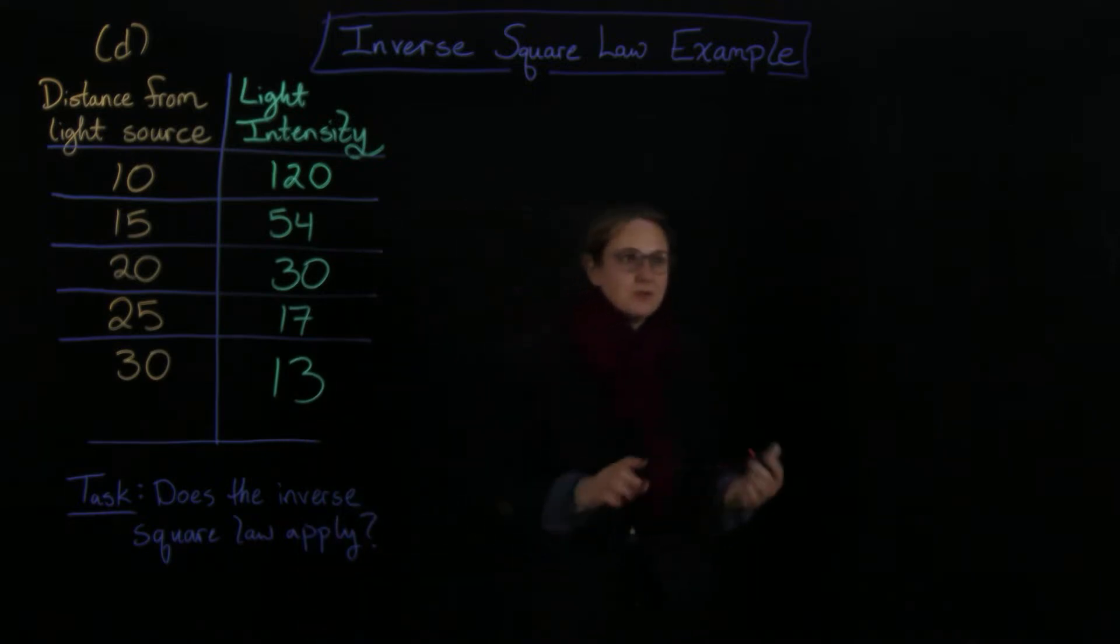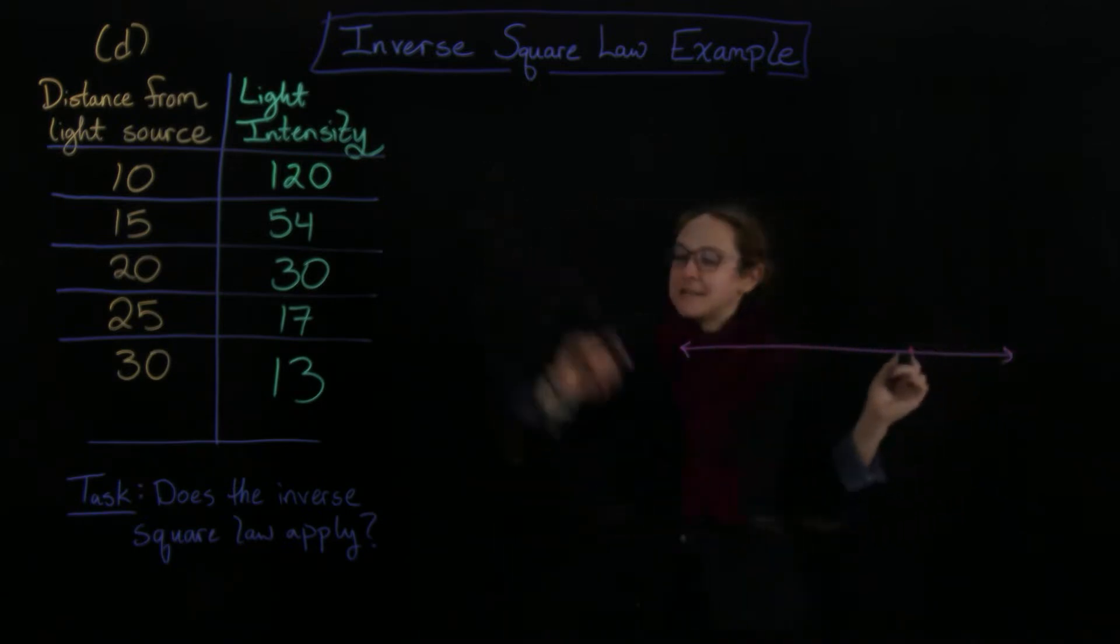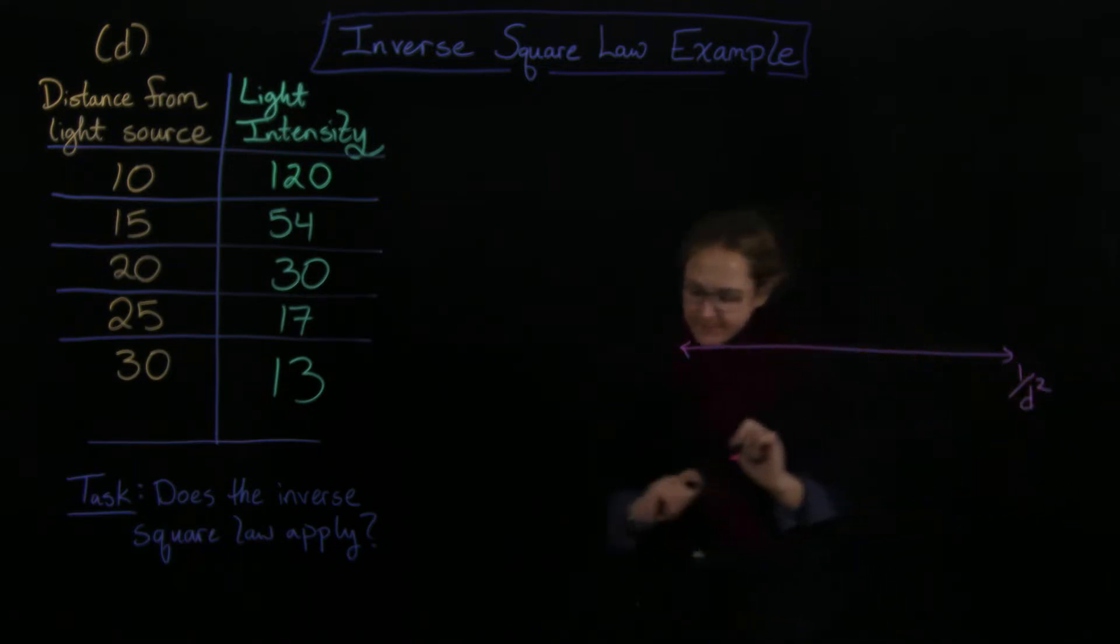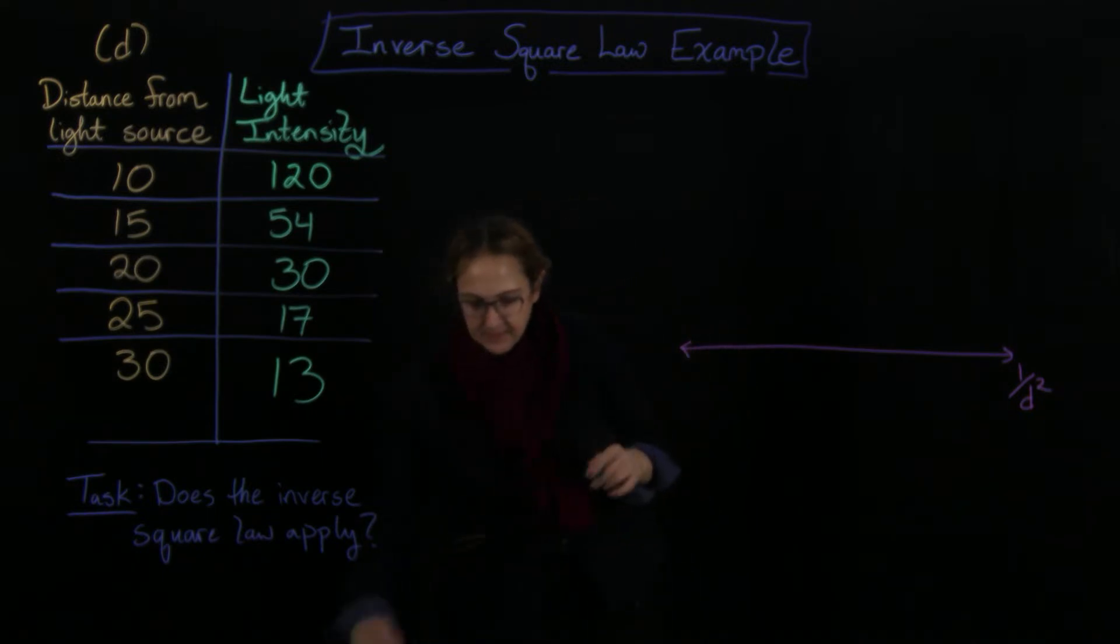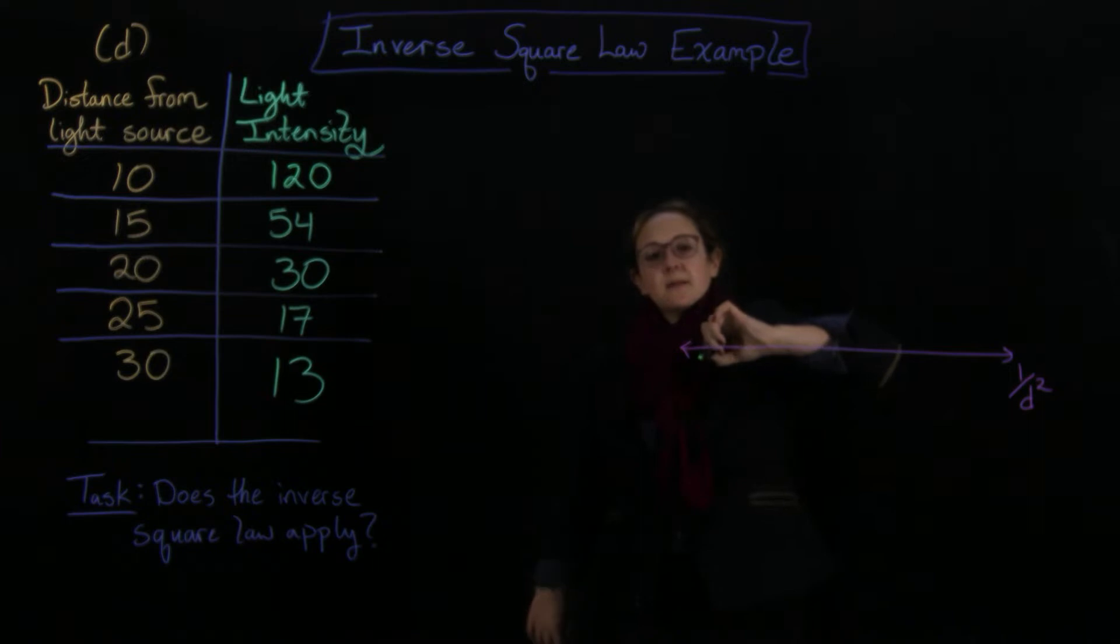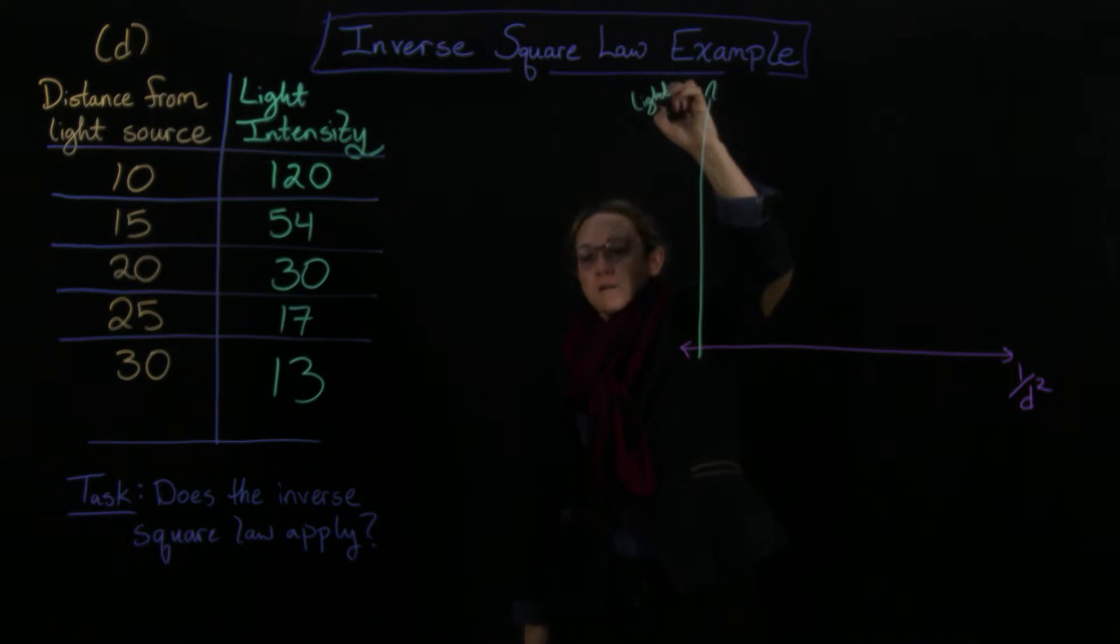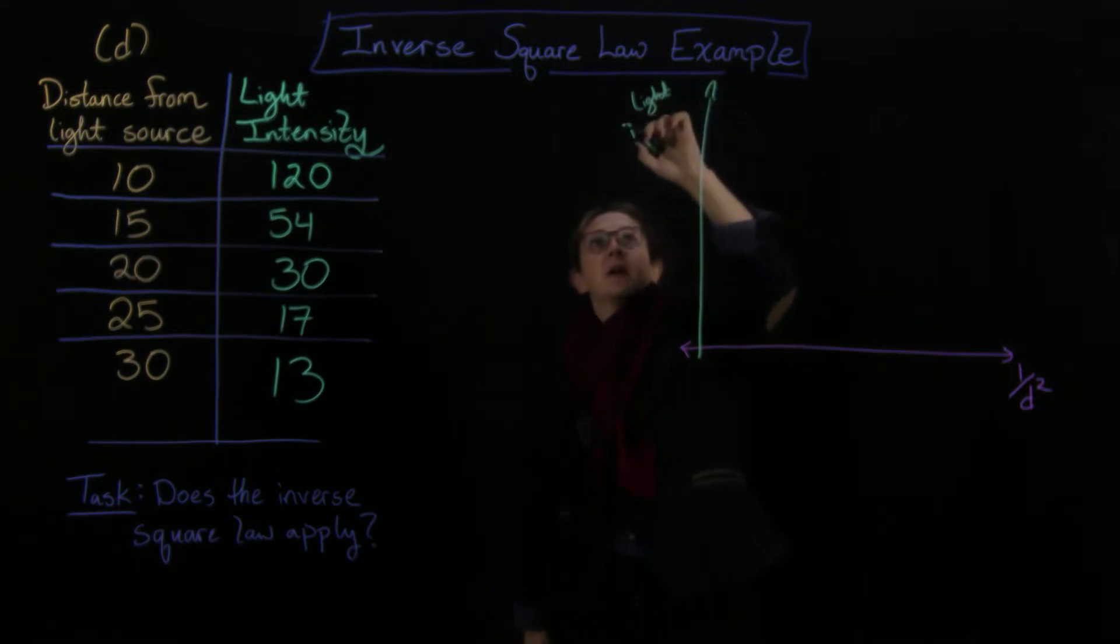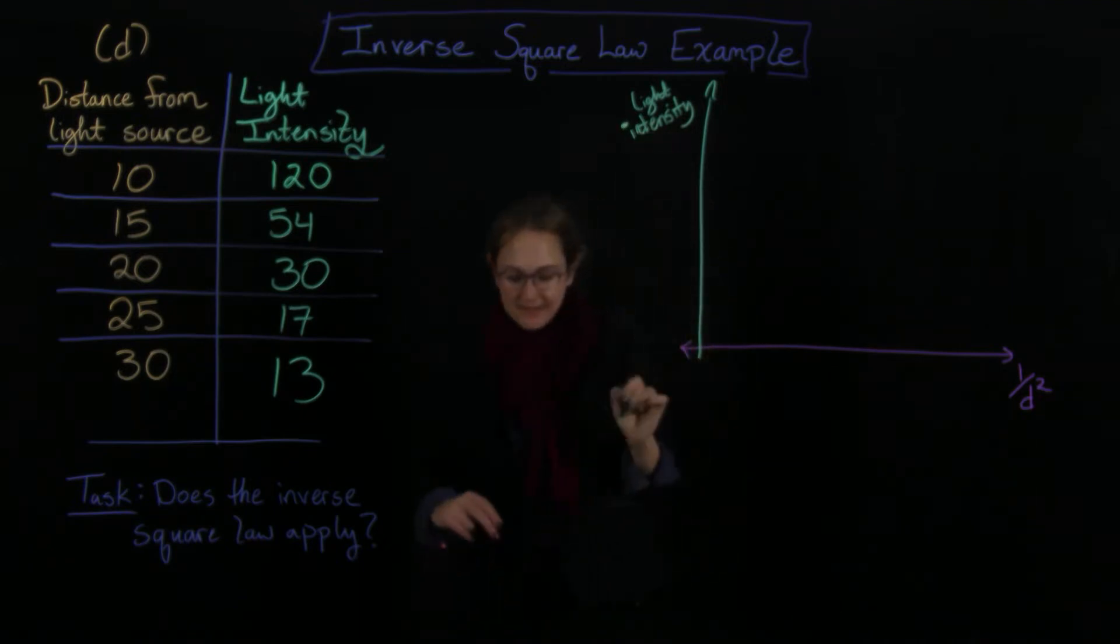The trick to this that we're going to do is we're actually going to plot on the bottom, so that's my d, I'm actually going to plot 1 over d squared down here. And then on the other axis, I'm still going to plot the light intensity. What I need to figure out is if there's a proportional relationship between this one over d squared and this light intensity, or in other words, whether I get a line when I plot these.